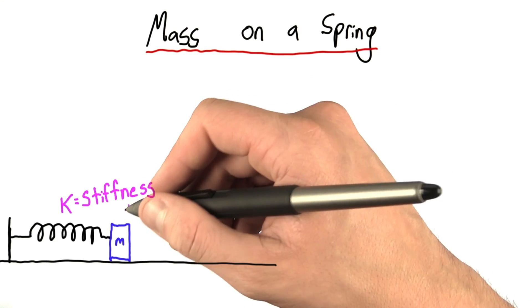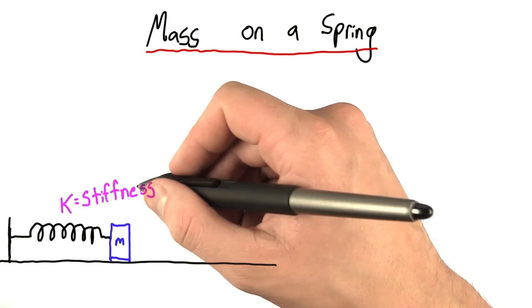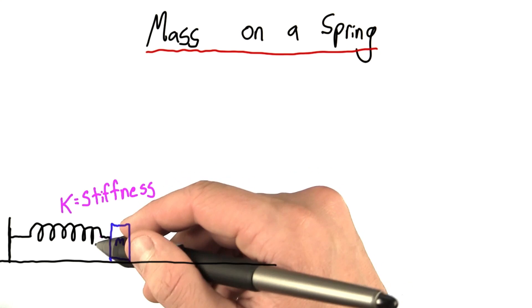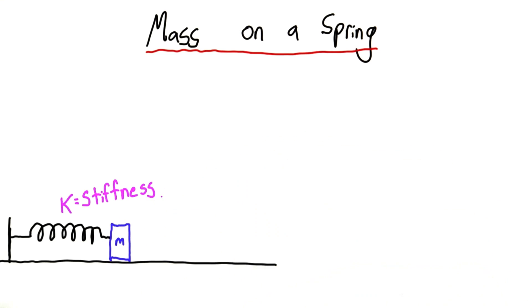For example, a rubber band's a sort of spring, and it would have a very low k, since it's not very stiff. The springs in your car, on the other hand, would have a very high k, because they're very stiff and hard to compress.